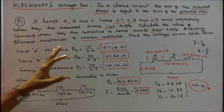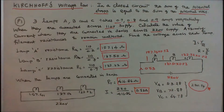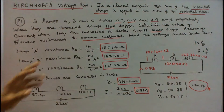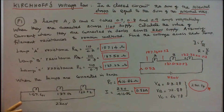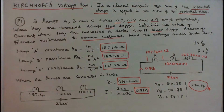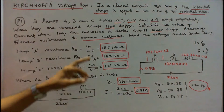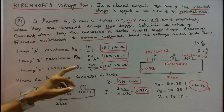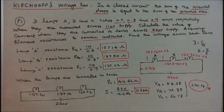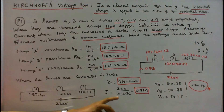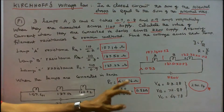The resistance remains unaltered. When they are connected in series — lamps A, B, and C are connected in series and we are giving a 220V supply — we have to find the current. The total resistance is R_A plus R_B plus R_C, which is equal to 416.86 ohms. Therefore, I is equal to 220 divided by 416.86, which is equal to 0.53 amps.